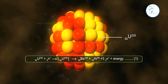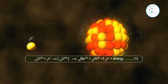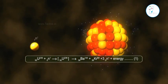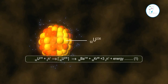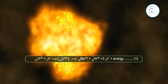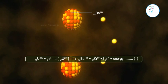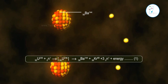92U235 plus neutron gives rise to 92U236, which gives rise to 56Ba144 plus 36Kr89 plus 3 neutrons plus energy. Equation 1.